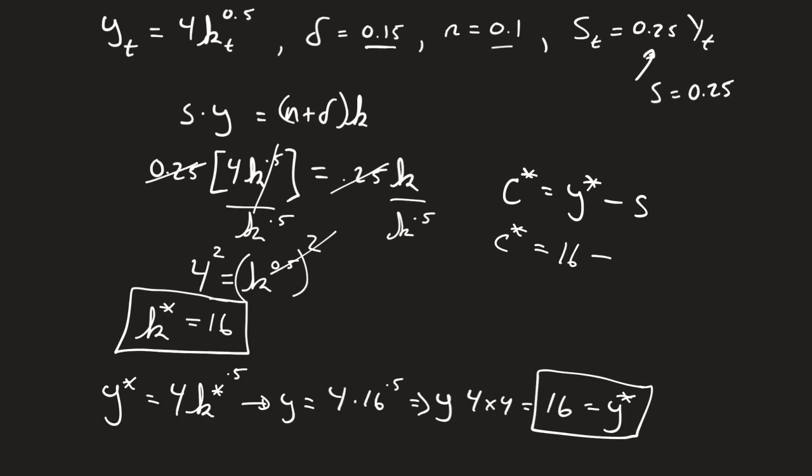So what does that mean? This is the total savings, so that means c star is going to equal y star, which is 16, minus my savings rate, which is 0.25, times my overall 16. So c star is going to equal 12.